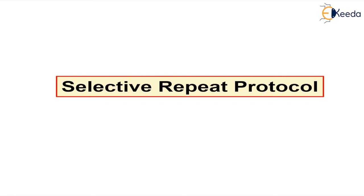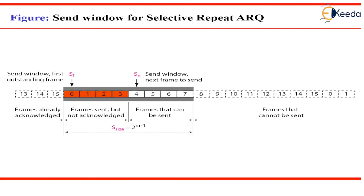Selective Repeat protocol also uses two windows: a send window and a receive window. However, there are differences from Go Back N protocol. First, the size of the send window is much smaller: 2 raised to m minus 1. For example, if m equals 2, the window size is 2 raised to 1, which is 2. For m equals 4, the sequence numbers go from 0 to 15 and the window size is 8.